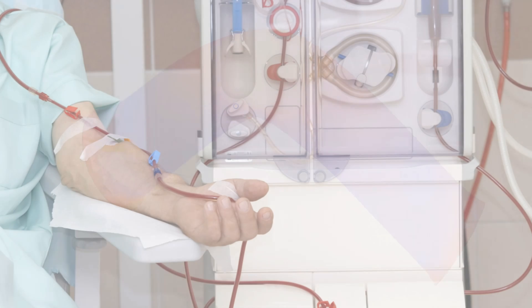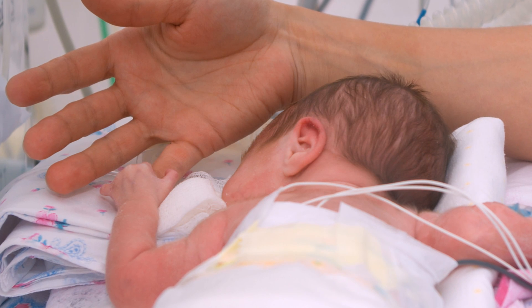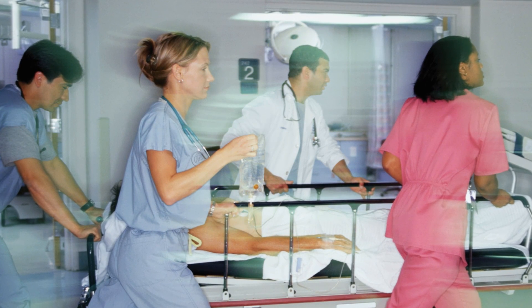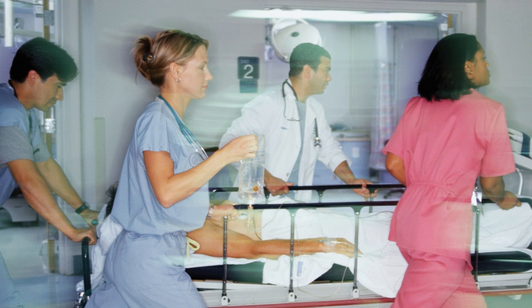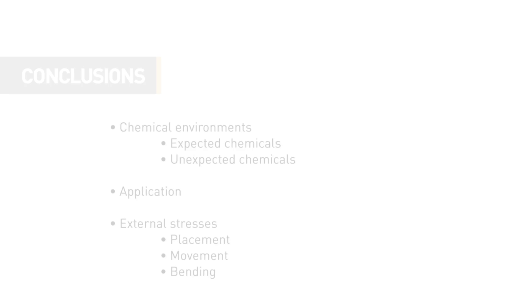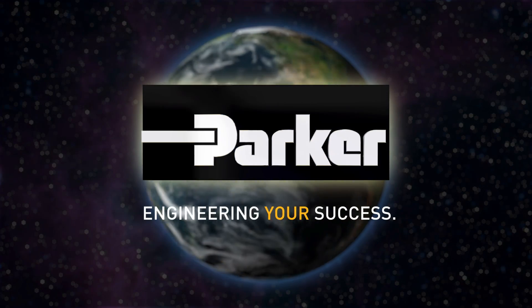The properties of polyurethanes make them highly desirable for use in medical devices. However, there are a variety of polyurethane formulations, and choosing the right one for a given application can be complicated. To ensure the most robust design choice, careful consideration must be given to a host of factors, including chemical environments — both the expected chemicals associated with designed use and unanticipated chemicals such as disinfectants and cleaning agents — as well as application and external stresses placed on the device, such as placement, movement, and bending. For help selecting the right polyurethane for your medical device application, contact the experts at Parker Hannifin.